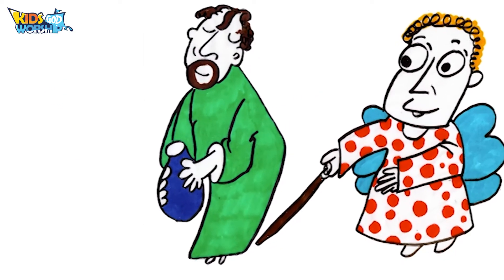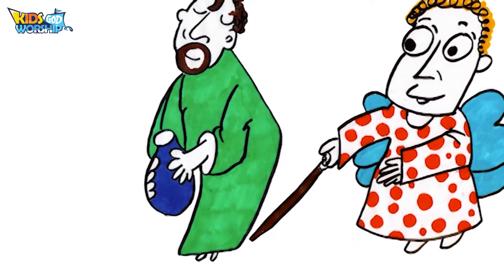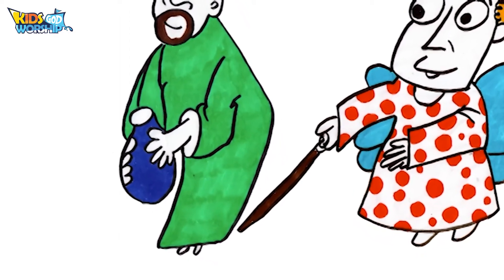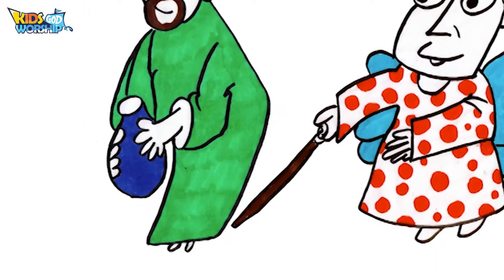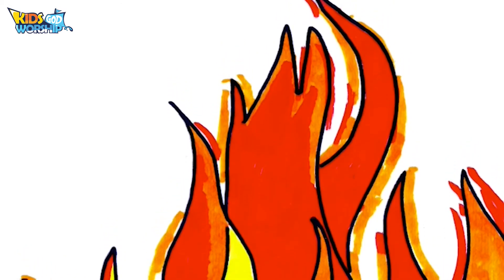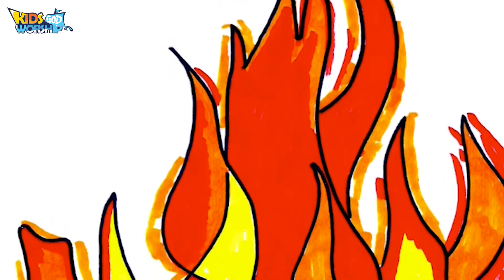Place the meat and the unleavened bread on this rock and pour the broth over it. When the angel of God touched the meat, right at that moment, fire flamed up from the rock and consumed the bread, and the angel of the Lord disappeared.